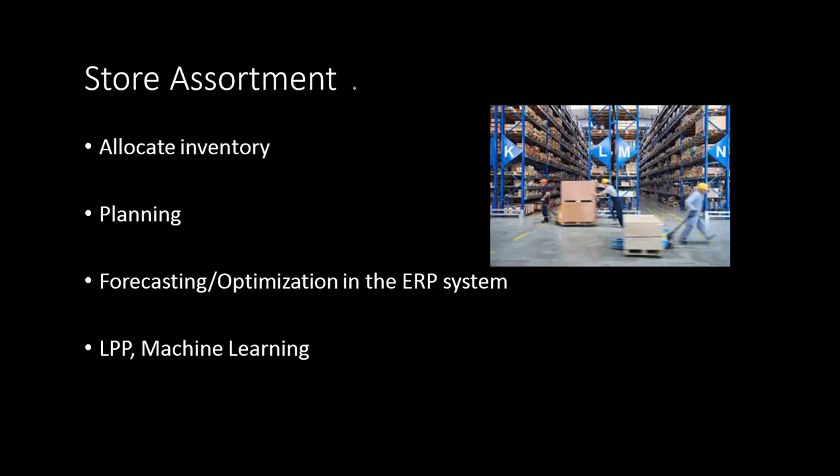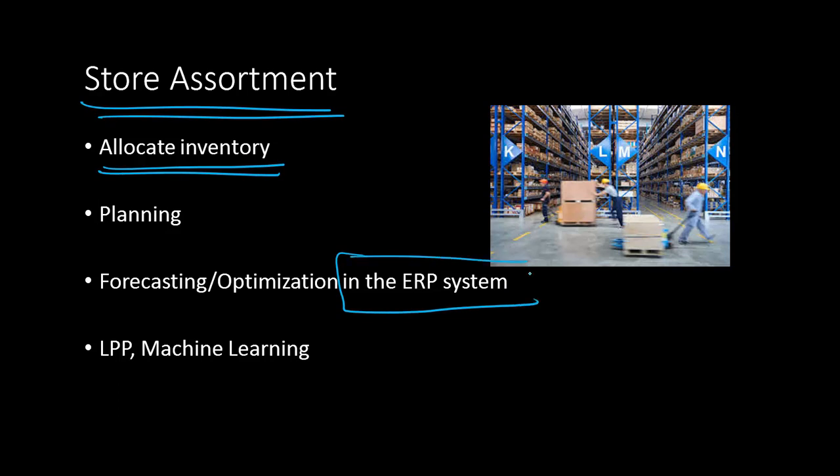Store assortment is more about inventory analytics. You allocate inventory more efficiently by using data. You can use operations research or machine learning algorithms. Most of the ERP systems like Oracle or SAP do not quite have sophisticated forecasting optimization algorithms. They are building a lot of structure but it's still not very efficient.